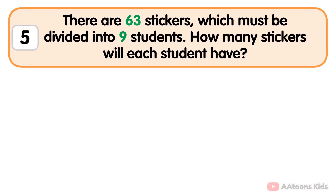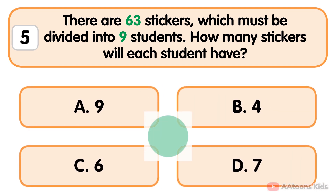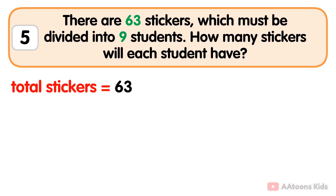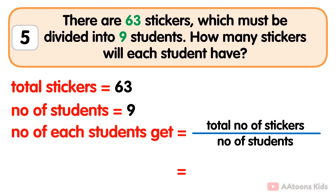There are 63 stickers which must be divided among nine students. How many stickers will each student get? Seven. The total number of stickers is 63 and the total number of students is nine. To find out how many stickers each student gets, simply use the division method: the total number of stickers divided by the number of students.